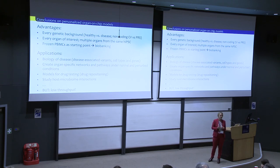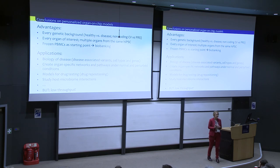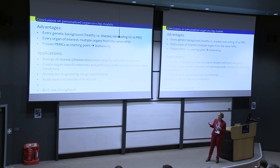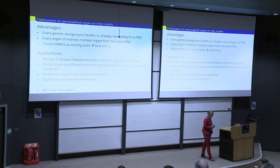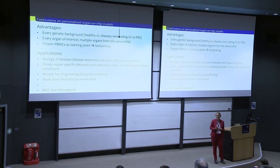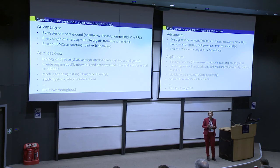The applications are many: the biology of disease, investigating any variant, gene, or cell type. You can create organ-specific networks and pathways, and for many tissues it's hard to get material from living donors. You can study things under normal conditions but also under a wide range of perturbed conditions. You have a model for drug testing — small molecule screens — and you can test if existing drugs might work in your disease of interest. You can study host-microbiome interactions. The only drawback so far is that this is still a relatively low-throughput system. With robotics you can scale up a little bit, but it's hard with a small team to do more than 100 per year.